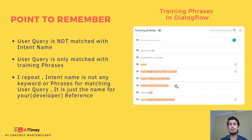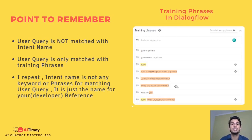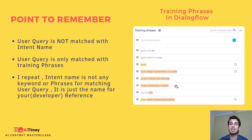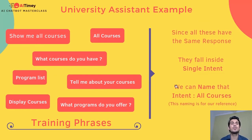One important point to remember: the user query is matched with the training phrase, not with the name of the intent. Your intent name could be simply anything — it has nothing to do with the matching. The intent name is not a keyword, it is not the training phrase that the user message is being matched against. All matching is done through training phrases; user queries are only matched with training phrases, not with intent names.